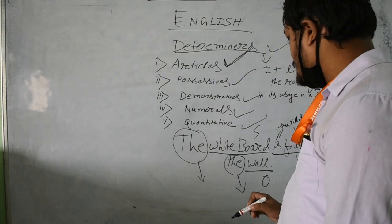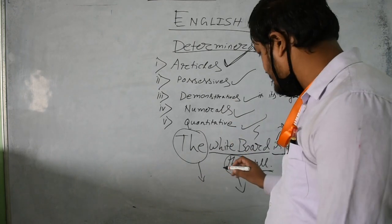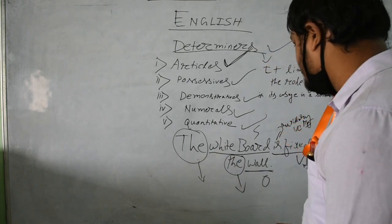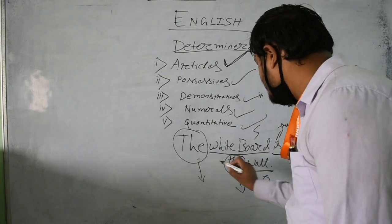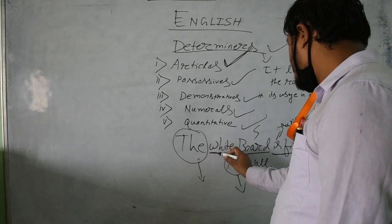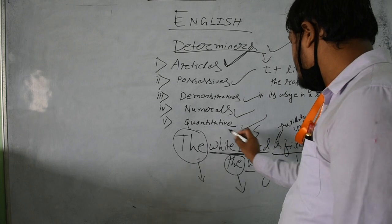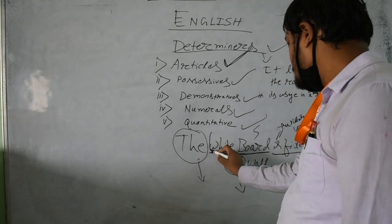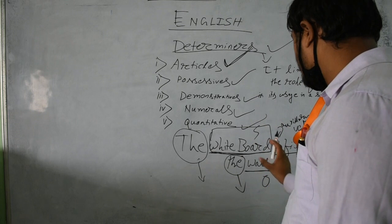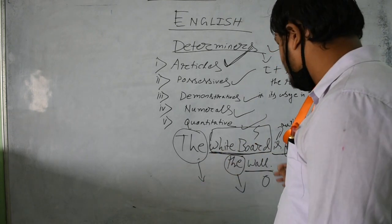So what are articles? These two — 'the' before 'white boat' and 'the' before 'wall' — are articles. Without the usage of these, the noun 'white boat' would not get its due as to how it is used in this sentence. 'White boat' is also a noun here.